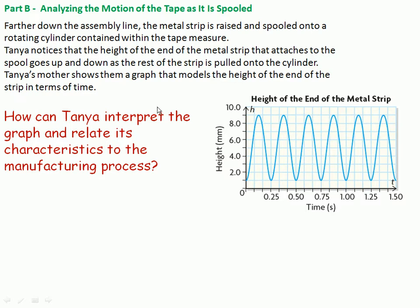Another question on the second page. Farther down the assembly line, the metal strip is raised and then spooled or coiled into the rotating cylinder within the tape measure. Tanya notices the height of the metal strip that attaches to the spool goes up and down as the rest of the strip is pulled into the cylinder. If it starts at the bottom here, it would cycle up to the top of the spool and back down again as one circumference of that spool is cycled on. We're asked how can Tanya interpret the graph and relate its characteristics to the manufacturing process.